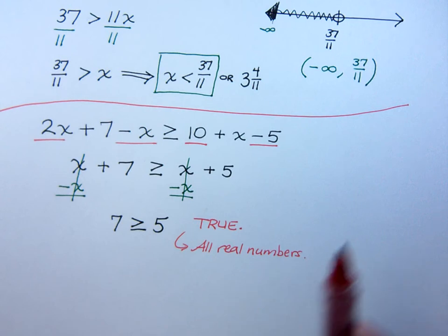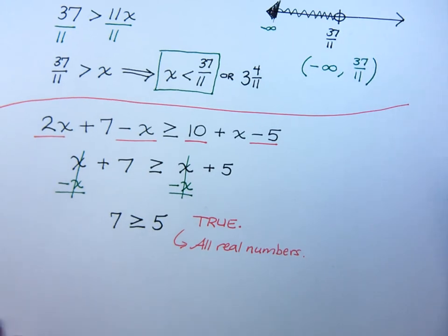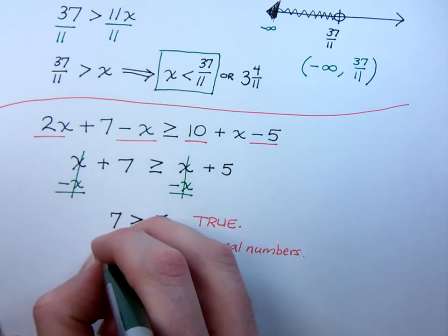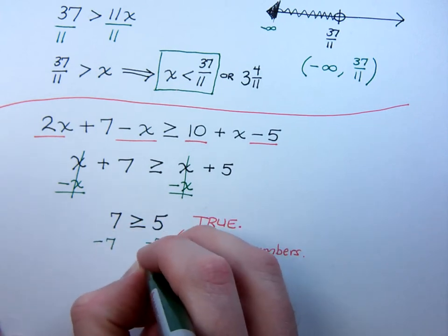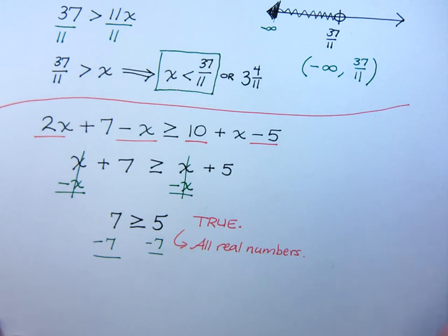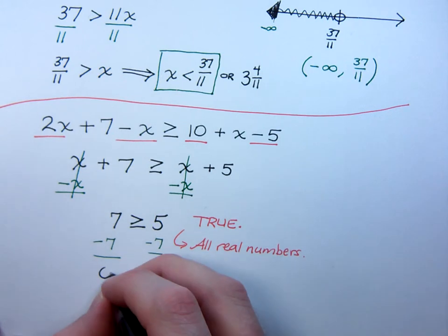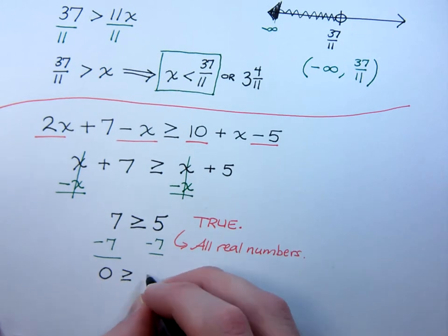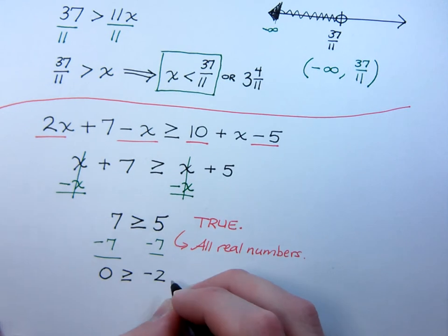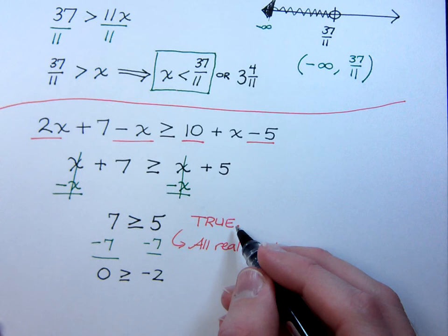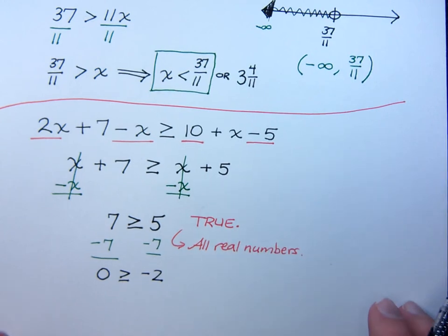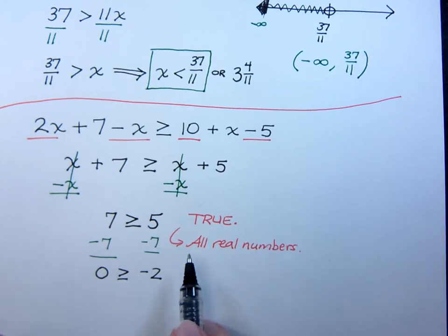Now, some of you may say, Mr. Craig, I'm going to go ahead and move all my constants to one side. You know what? What if you did that? What if you, I've got to move my constants to the right? Yeah, you know what you get? 0 is greater than or equal to negative 2. Which is still a true statement. It's still going to be a true statement. You're not going to be able to work around that. And it's going to mean all real numbers.